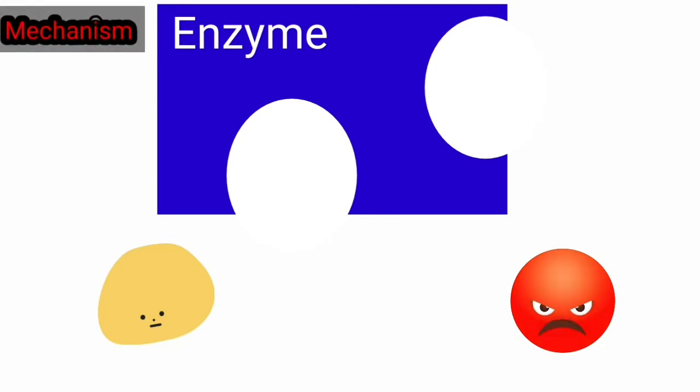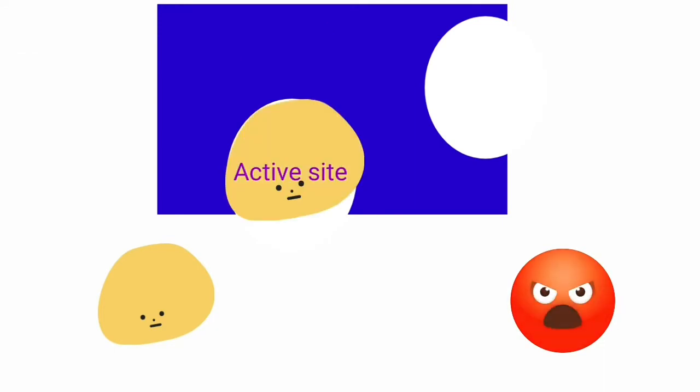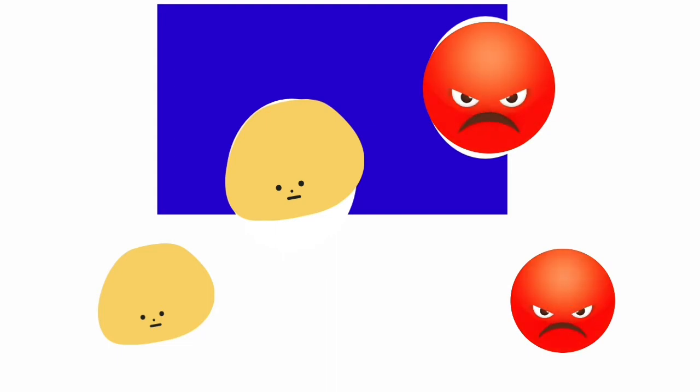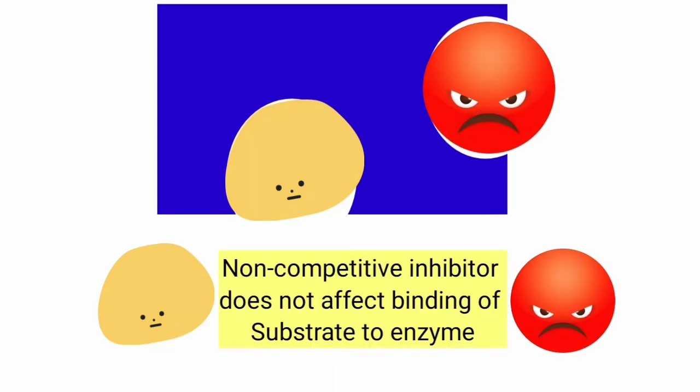The mechanism of non-competitive inhibition is very simple. Here the substrate binds at the active site of the enzyme, whereas the inhibitor binds at a different site on the enzyme. So both inhibitor and substrate can bind with the enzyme at different sites. The non-competitive inhibitor, which binds to the enzyme at a site other than the active site, will not interfere with the binding of substrate to the enzyme.